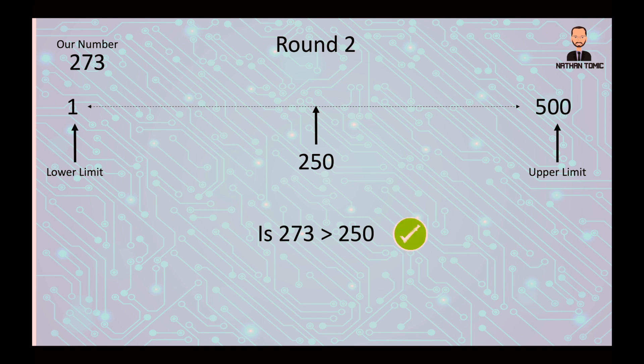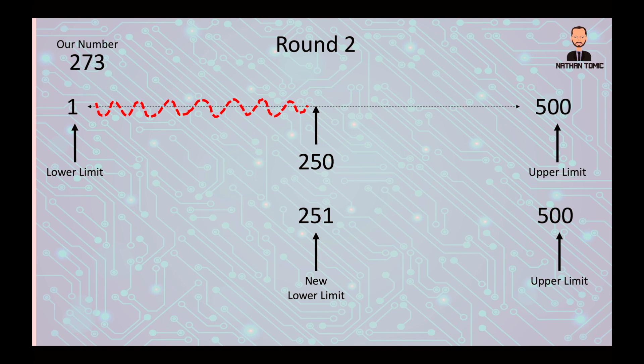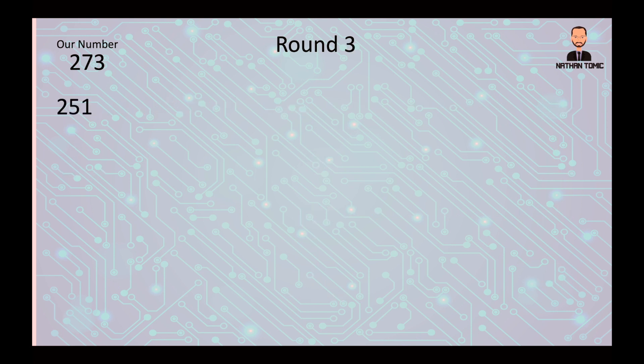In this case it is. So everything below 250 is being wiped out, all the numbers from 250 downwards. This time it does include 250, so our new upper limit is 500 and our new lower limit is 251 because we've said our number is greater than 250. Round three: 251 as our lower limit to 500 as our upper limit still.